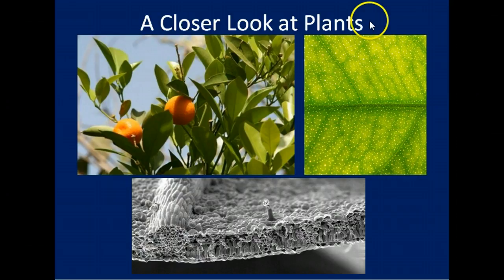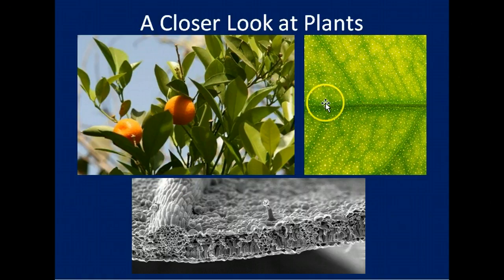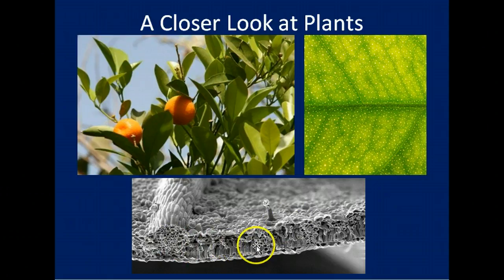Now if we were to take an even closer look at this leaf — if we were to cut it right here and look at it with an electron microscope — this is what we would see. This vein running up the picture is the central vein in the leaf. We're going to look at the individual cells that make up this leaf. Here's a little long cell, here's another little cell. We're going to take a really, really close look at plant cells.